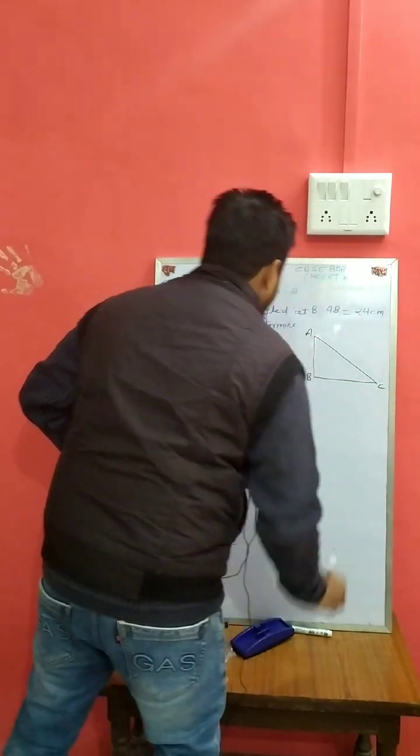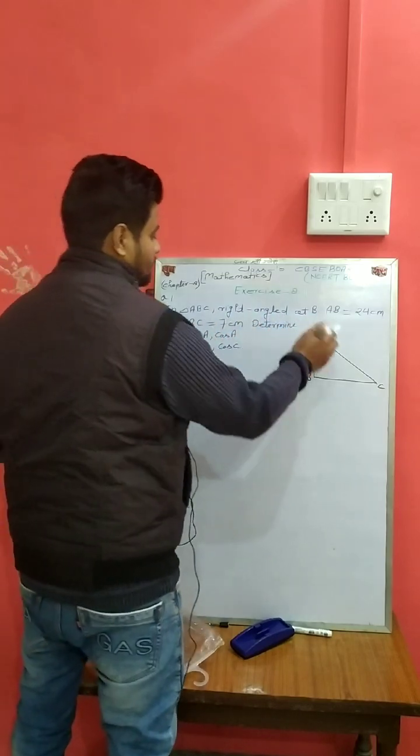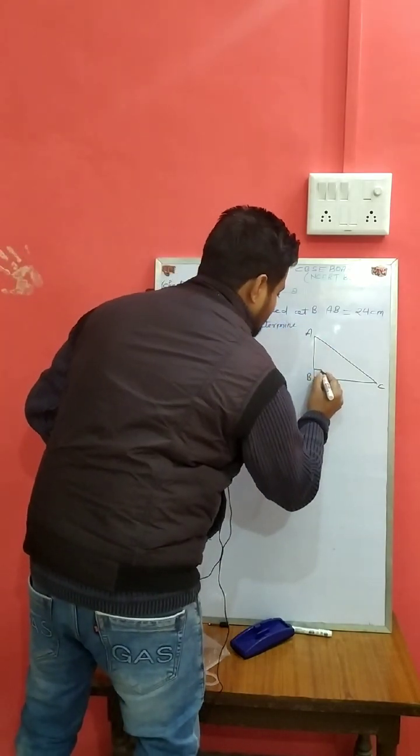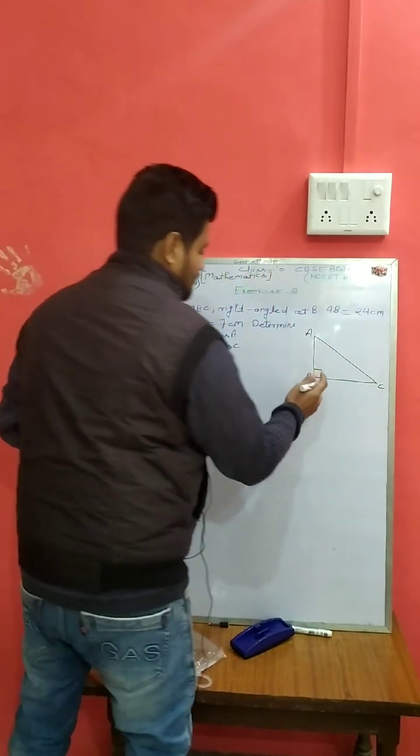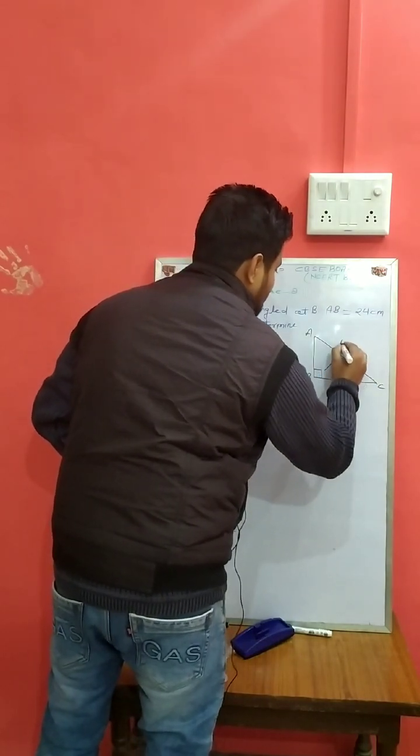So this is a right angle, and opposite to the right angle is the hypotenuse. Opposite to right angle is hypotenuse.